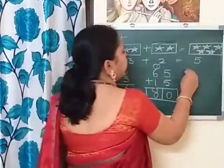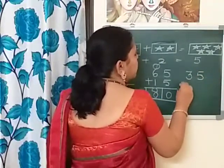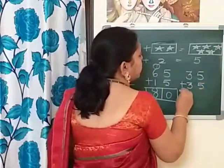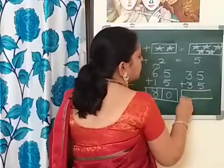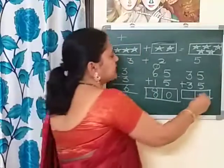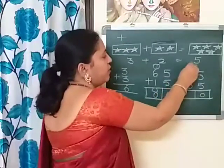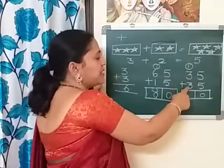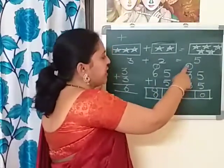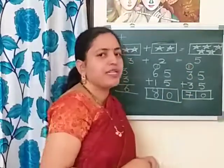Suppose we are adding thirty-five plus thirty-five. Five plus five is ten — correct, so we put zero here and carry over one. Three plus three is six, plus the carry over one makes seven. So the answer is seventy. I hope you understand today's lesson and enjoyed it. Thank you so much for joining me.